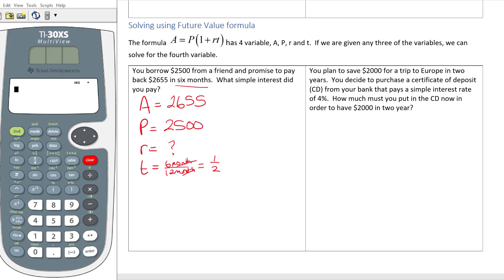Now I'm going to plug all my values in my formula. A equals P, parentheses, one plus R, T. A is 2655 equals P, which is 2500, parentheses, one plus R times one half.